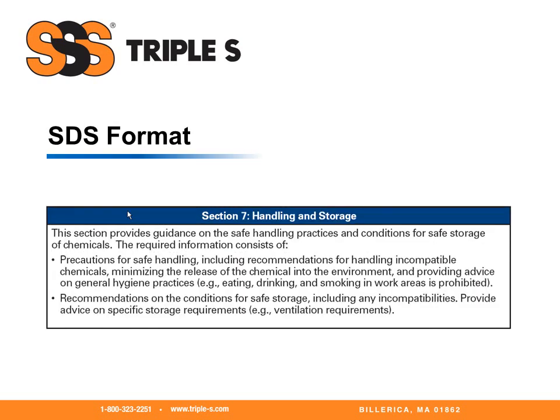Section seven, handling and storage. This section provides guidance on safe handling practices and conditions for safe storage of chemicals. The required information consists of precautions for safe handling, including recommendations for handling incompatible chemicals, minimizing the release of the chemical into the environment, and providing advice on general hygiene practices. It will also include recommendations on the conditions for safe storage, including any incompatibilities and specific storage requirements such as ventilation requirements.